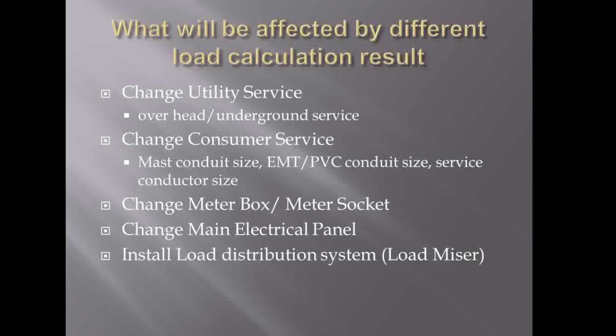If you cannot do a service upgrade, you may need to install a load distribution system — basically called a load miser. If you don't have enough power for your system, a load miser can balance your load. For example, if you have an electrical vehicle charger, you can use a load miser together with a range or a dryer so that you cannot use the two loads at the same time. That may be another option for you.